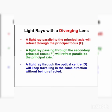There are three main cases for light rays through a diverging lens. First, a light ray parallel to the principal axis will diverge through the principal focus. Second, a light ray passing through the secondary principal focus will reflect parallel to the principal axis. Third, a light ray through the optical center will keep travelling in the same direction without being refracted.